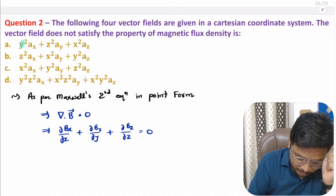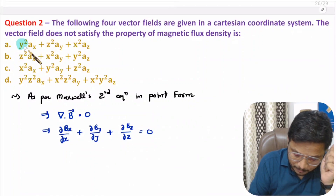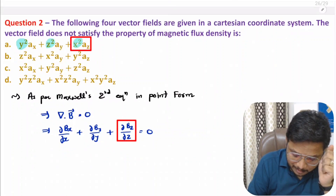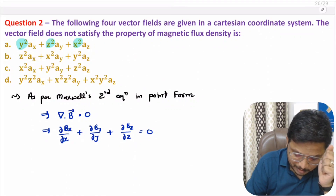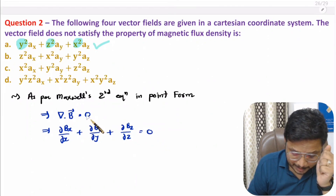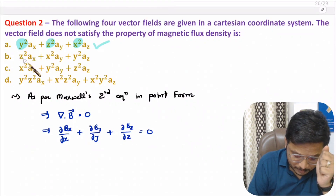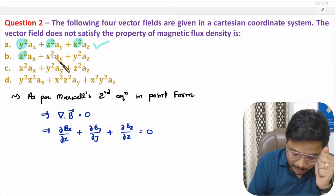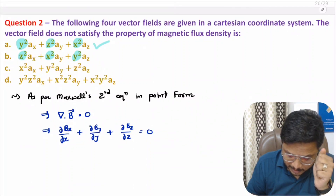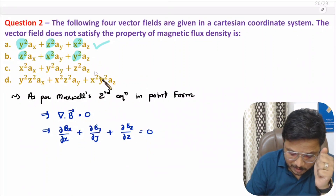For equation A: partial differentiation of y² with respect to x is zero, and partial differentiation of z² with respect to z is also zero — so equation A satisfies the condition, divergence equals zero. For equation B: partial differentiation of z² with respect to x is zero, partial differentiation of x² with respect to y is zero, and partial differentiation of y² with respect to z is also zero — so equation B also satisfies the condition.